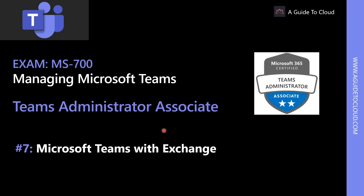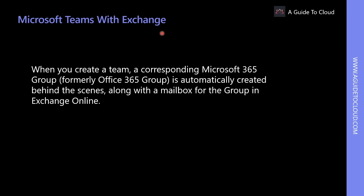Now let's understand how Microsoft Teams is integrated with Exchange. When you create a team, a corresponding Microsoft 365 Group — formerly known as Office 365 Group — is automatically created, and this group mailbox provides messaging capabilities and a mail-based storage location for data. For each Microsoft 365 Group associated with a team, a corresponding group mailbox is automatically created in Exchange Online, providing resources for messaging and a calendar for planning meetings.